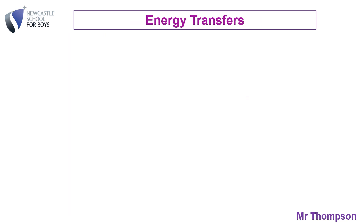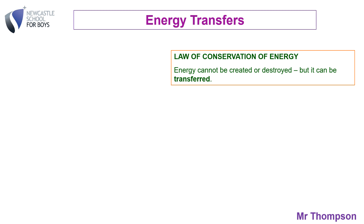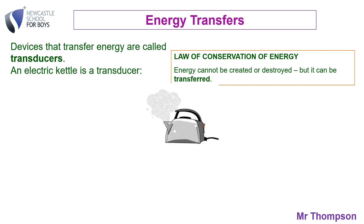I'm going to talk about energy transfers now. It relies on the law of conservation of energy. Energy can't be created, it can't be destroyed, but it can be transferred from one form to another. Some examples: a kettle is a transducer. A transducer changes one form of energy to another. So a kettle — you can draw it like a little flow diagram — changes the electrical energy that comes in from the plug into the heat energy store to heat up the water.